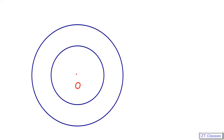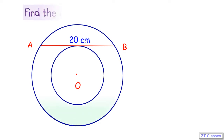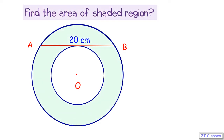Let's discuss today's question. We have two concentric circles with center O. The chord AB of the outer circle is acting as a tangent for the inner circle. If the length of the chord is 20 cm, find the area of the shaded region.